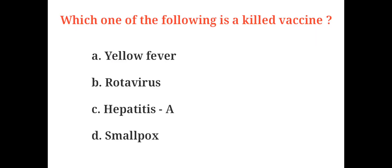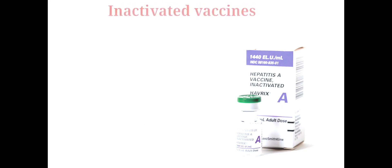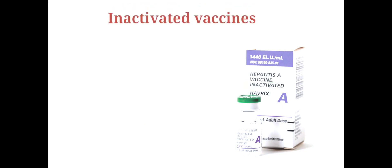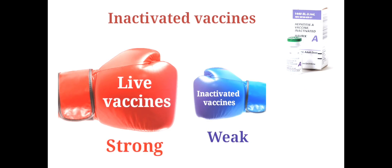Which one of the following is a killed vaccine? A. Yellow fever, B. Rotavirus, C. Hepatitis A, D. Smallpox. And the correct answer is C. Hepatitis A. Inactivated vaccines use the killed version of the germ that causes a disease. Inactivated vaccines usually don't provide protection as strong as live vaccines, so you may need several booster doses over time to get ongoing immunity.